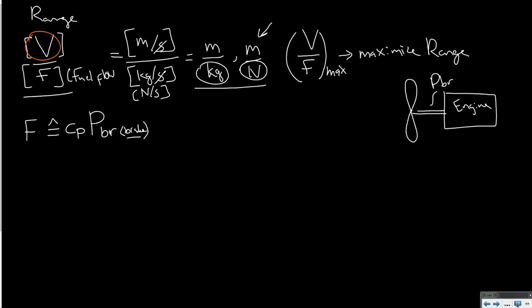And the power this engine delivers to the shaft is what we call PBr. So Br stands for brake. And in the old days, they used to have a brake to measure how much power there was in the shaft. Now, this power, of course, is translated by the propeller in a forward force T. And if you multiply T with the airspeed, you get power available.